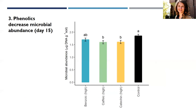For microbial abundance: even though benzoic acid increased microbial respiration overall, its abundance was not increased. For caffeic acid and catechin, we do see a decrease in abundance, and these treatments also showed a decrease in respiration — so abundance may explain part of the story for caffeic acid and catechin, but not for benzoic acid.